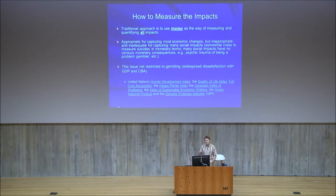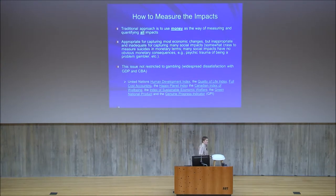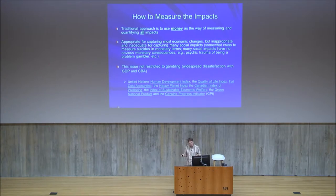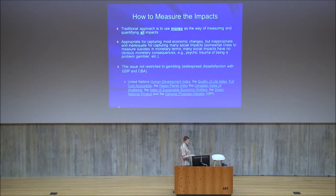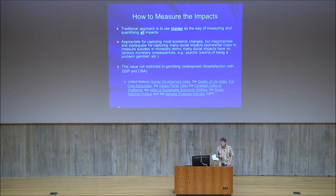This issue is not restricted to gambling — there's widespread dissatisfaction with financial indices measuring societal progress. Gross domestic product, for example, is basically a measure of total purchases and sales in a jurisdiction in a certain time period. That's a reasonable measure of economic activity, but it's not a good overall measure of societal progress. Many different organizations, including the United Nations, have proposed alternatives — quality of life indices, well-being indices, etc.